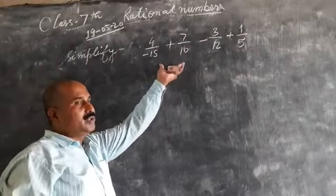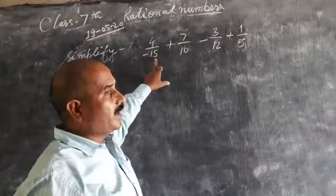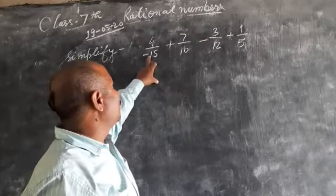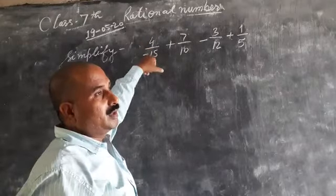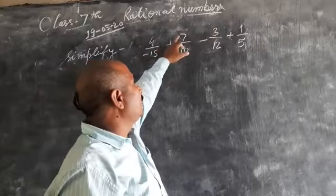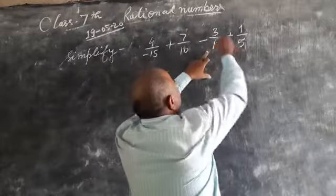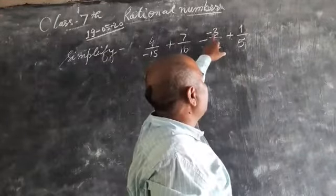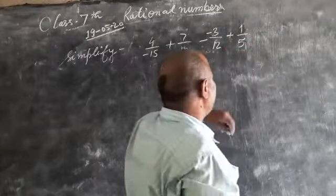If you are getting this type of question, 4 upon minus 15, that means this is a negative rational number. In negative rational numbers, either numerator is negative or denominator is negative. Anyone may be negative. Second, one positive rational number 7 by 10 minus 3 by 12, this one also negative rational number plus 1 by 5, this is positive rational number.